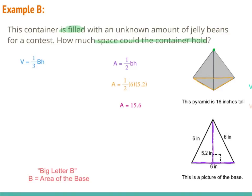Now that we have big B, we just need the height of the pyramid. Note that the height of the base is not the same as the height of the pyramid — we need how tall it is from the bottom to the top. They told us this pyramid is 16 inches tall, so we plug in one-third times 15.6 times 16. When we multiply those together we get 83.2 cubic inches.